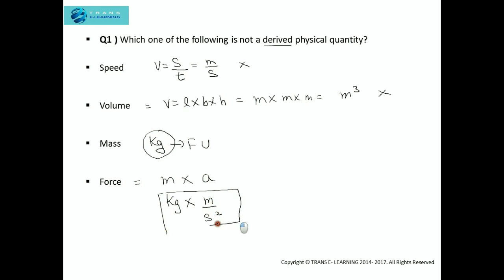You can see that force, volume, and speed are all derived because they depend on other physical quantities and units. Only mass is a fundamental quantity, as it has a fundamental unit, kg. So the answer is mass.